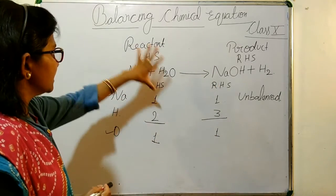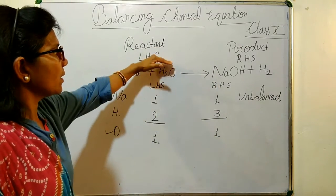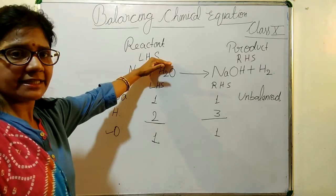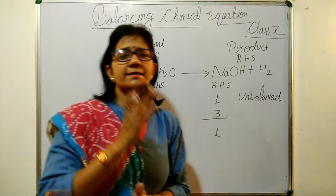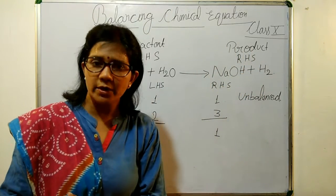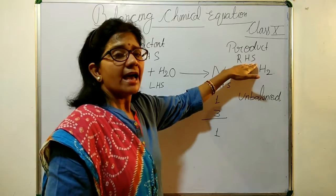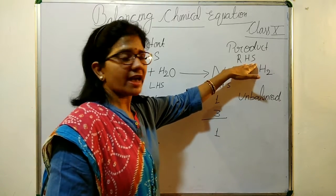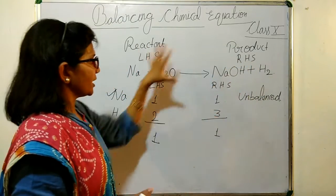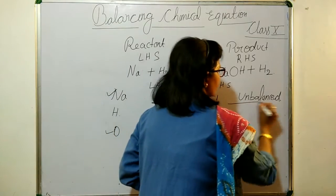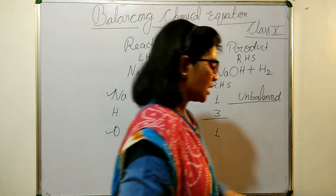If the number of atoms of any element on the reactant side is not equal to the number of atoms on the product side — the right hand side — then the equation is said to be an unbalanced equation.